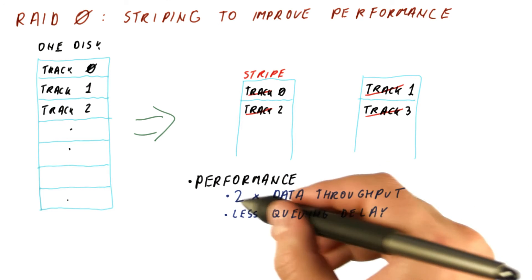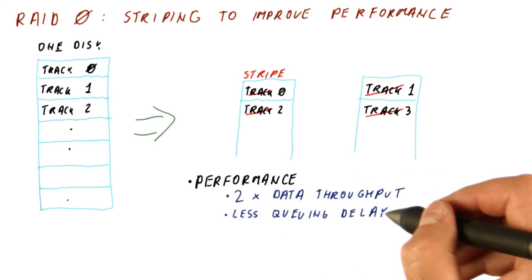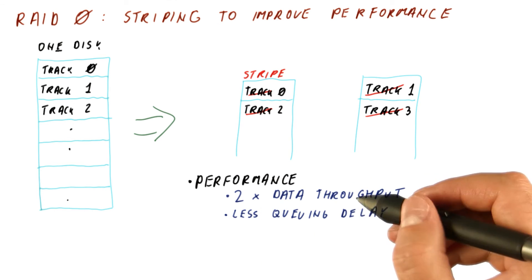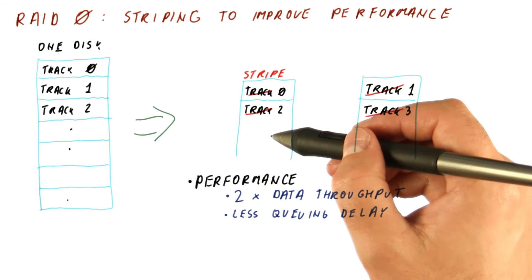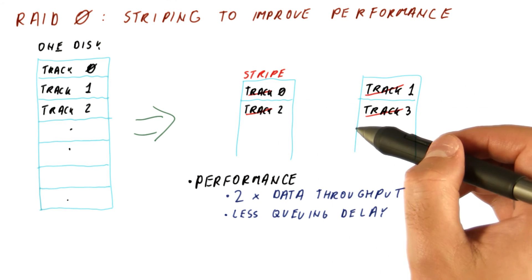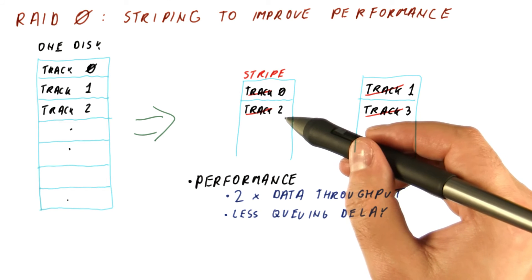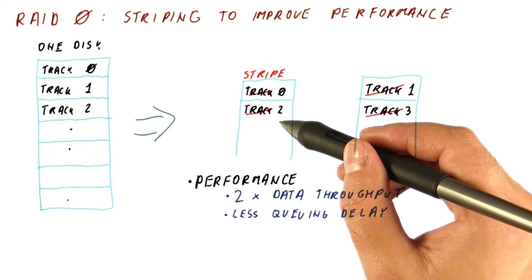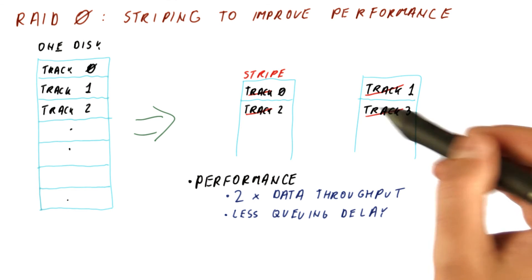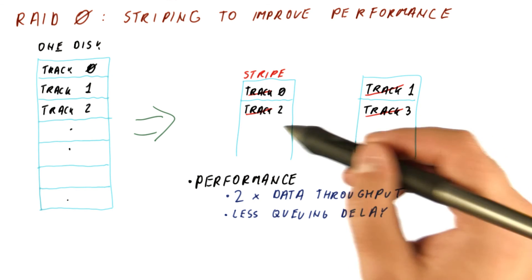As far as latency is concerned, because we have more throughput, we get less queuing delay. Normally we would be able to handle requests one at a time here. Now we can actually in parallel do two requests. So in the queue, we get faster to the request by basically handling previous requests faster.